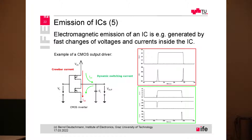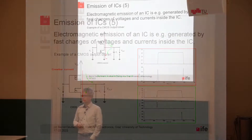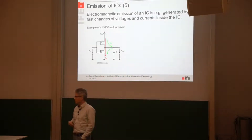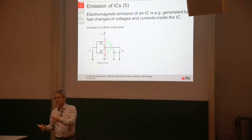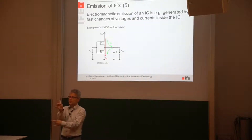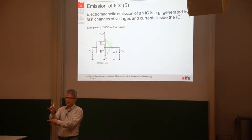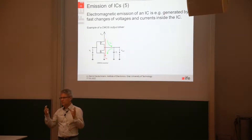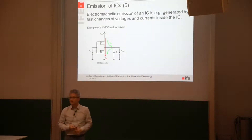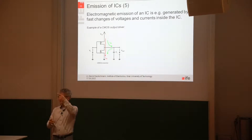So what's happening when the CMOS inverter is switching — when it's changing its state? There is a certain amount of time when the N-channel transistor and the P-channel transistor are turned on simultaneously. One is turning on, the other one is turning off, and vice versa. But there is a certain amount of time where both transistors are turned on, both in saturation mode. And this leads to the fact that there is a short between VDD and ground.